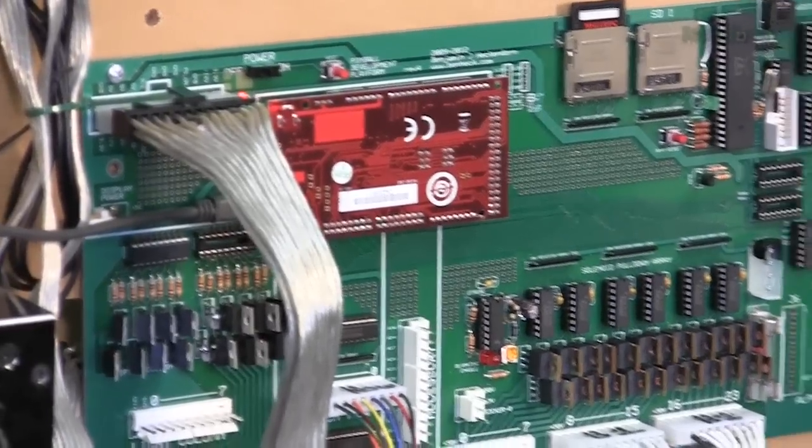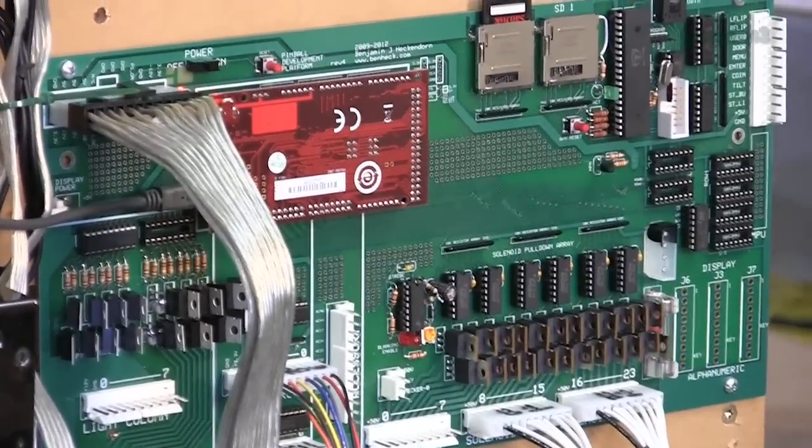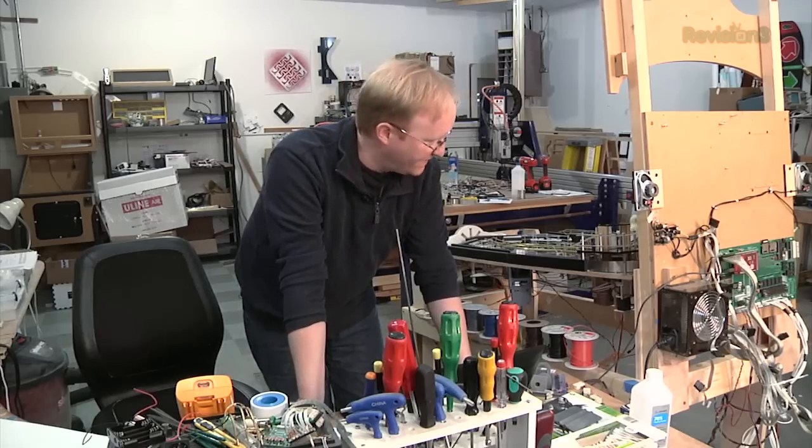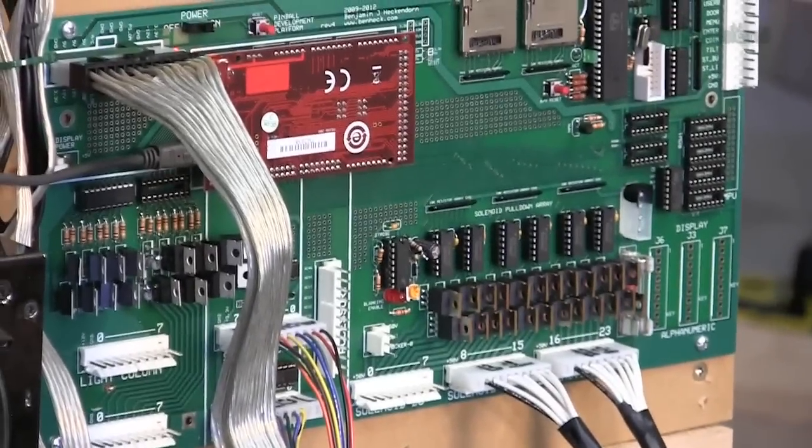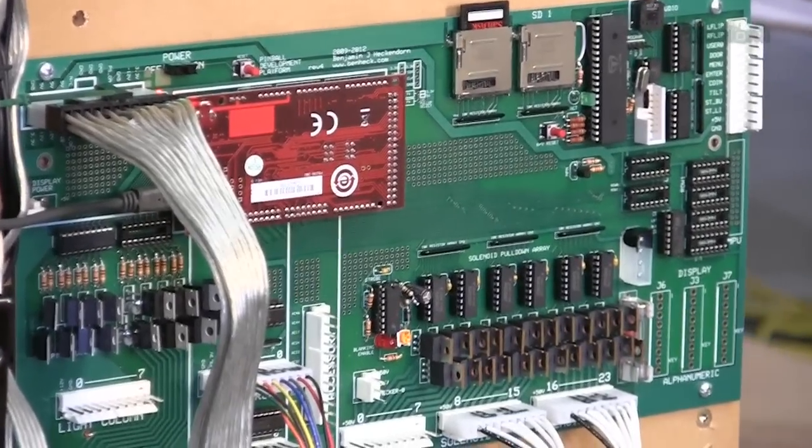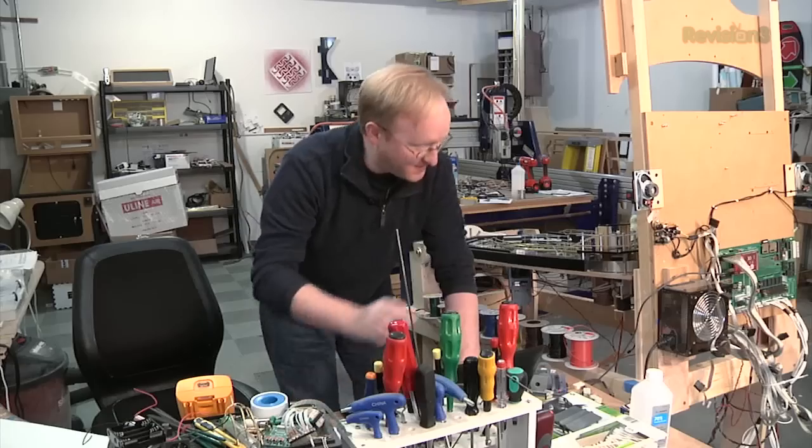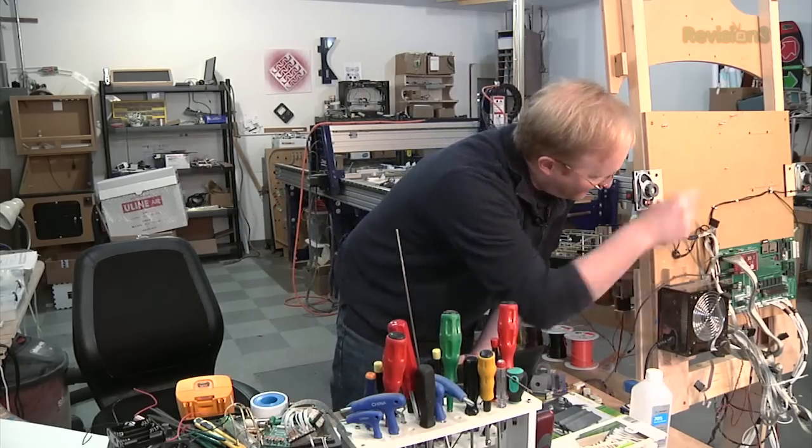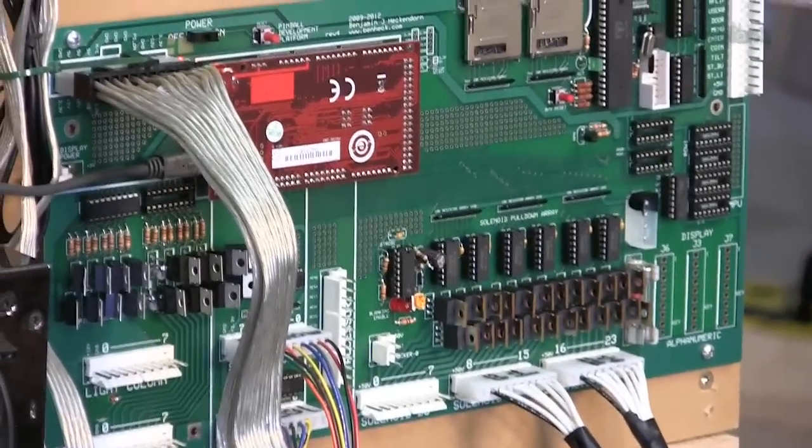So this has a ChipKit on it, which is a PIC32-based development board. I am programming it right now. And the first thing we're going to do is test the switch matrix. Because a friend of mine who I built one of these boards for said there were some issues with it. So we will take a look at that first. And we're going to be using the serial monitor. So this board will be sending the data serially to the computer so we can see what's going on.